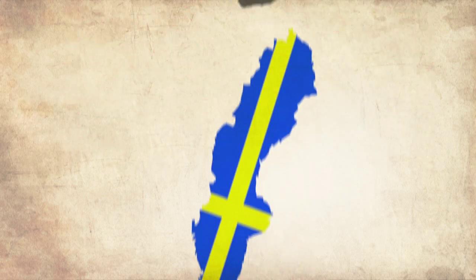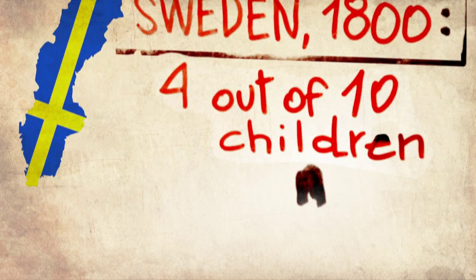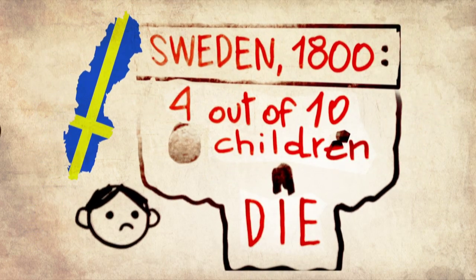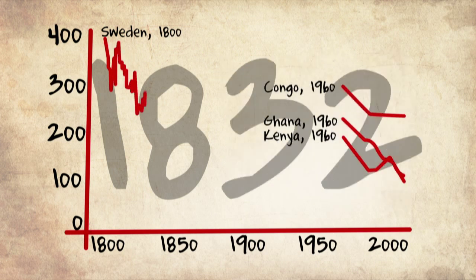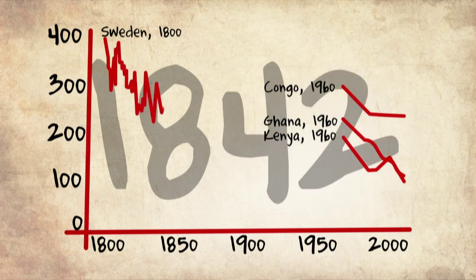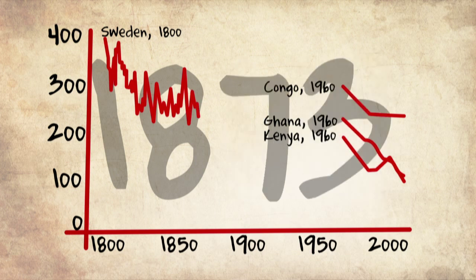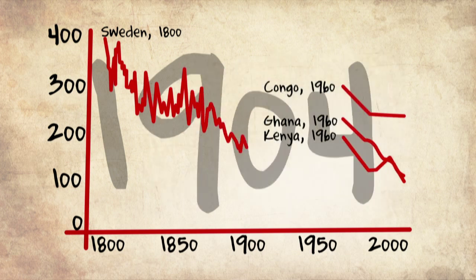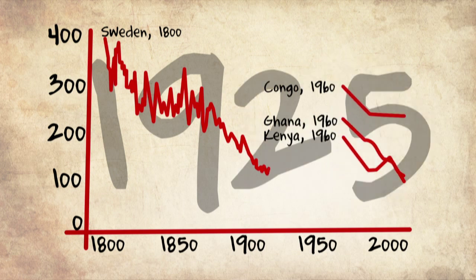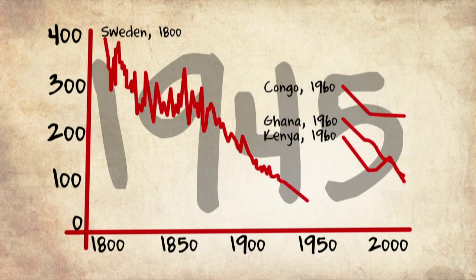Let me show the wider picture. My country, Sweden, in 1800 was up there. These were famine years — bad years — and people got fed up with Sweden; my ancestors moved to the United States. Eventually they started to get better and better. With better education and health service, child mortality came down.